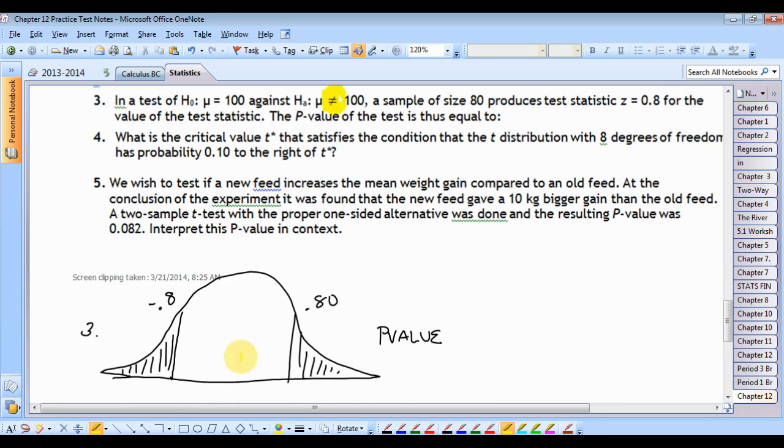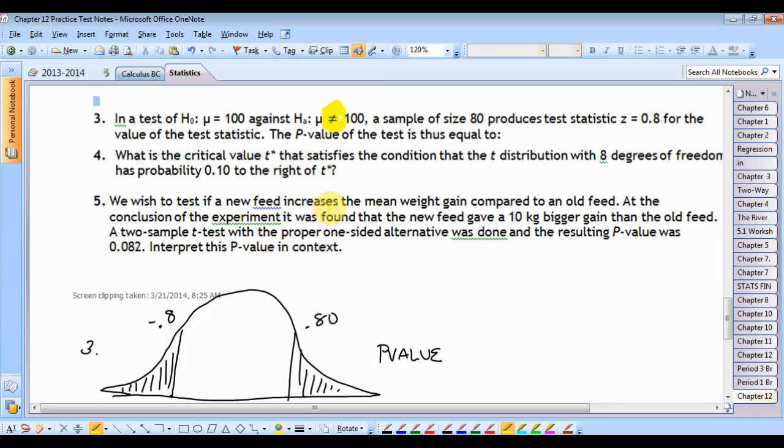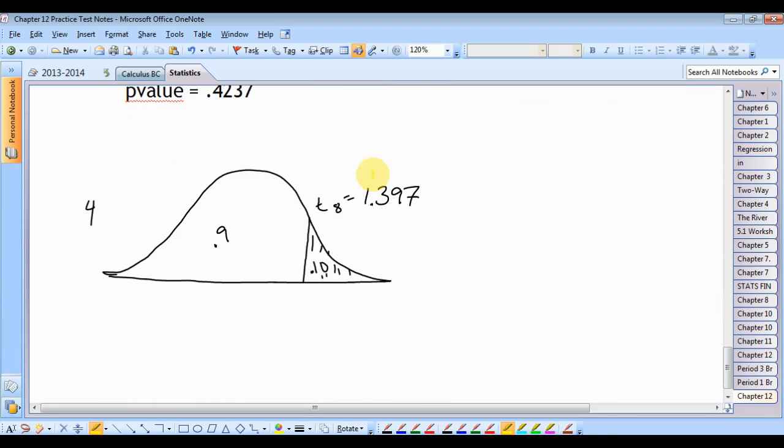Next question. Question four. The critical value, what is a critical value that satisfies the condition that the T-distribution with eight degrees of freedom has a probability of 0.1 on the right? Well, let's draw that. Here's a probability of 0.1 to the right.